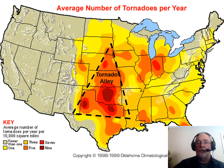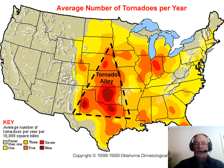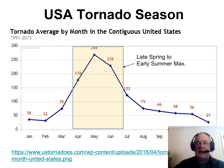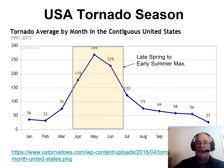If you were to chase tornadoes, you'd want to be in Oklahoma especially. Looking at tornadoes by month, they peak in springtime — April, May, June — with May being the prime month.